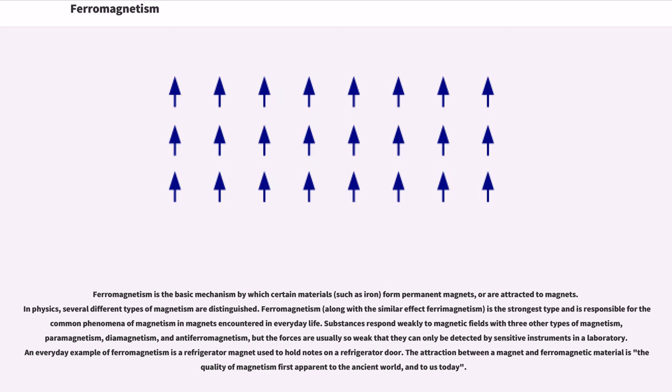Substances respond weakly to magnetic fields with three other types of magnetism: paramagnetism, diamagnetism, and anti-ferromagnetism. But the forces are usually so weak that they can only be detected by sensitive instruments in a laboratory. An everyday example of ferromagnetism is a refrigerator magnet used to hold notes on a refrigerator door. The attraction between a magnet and ferromagnetic material is the quality of magnetism first apparent to the ancient world, and to us today.